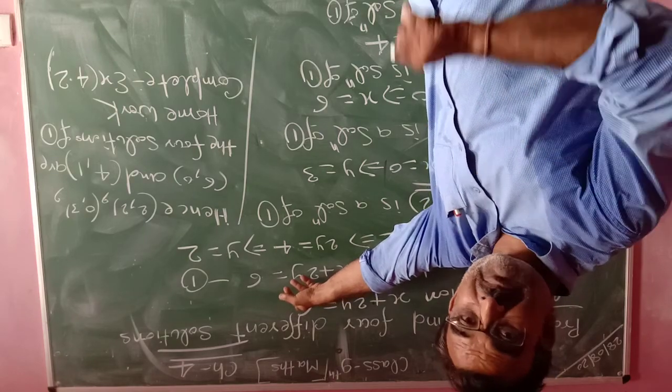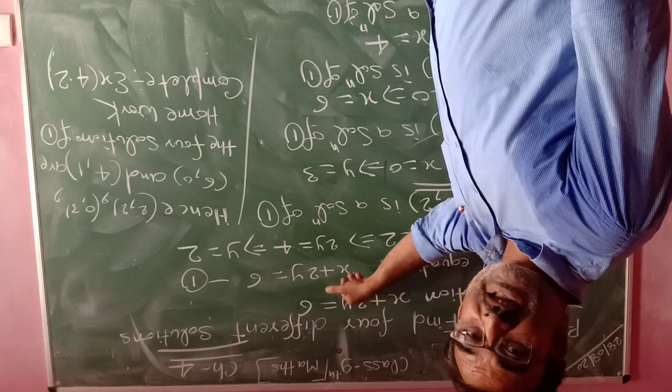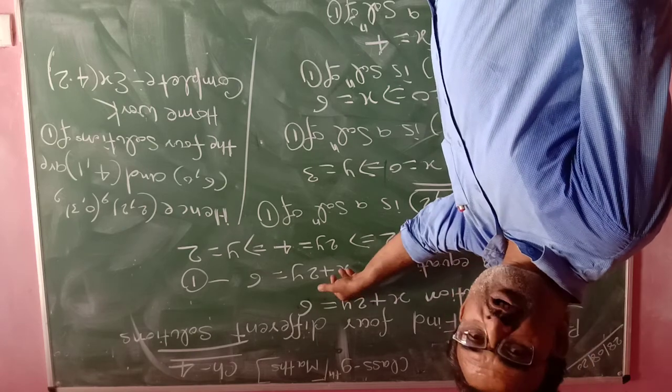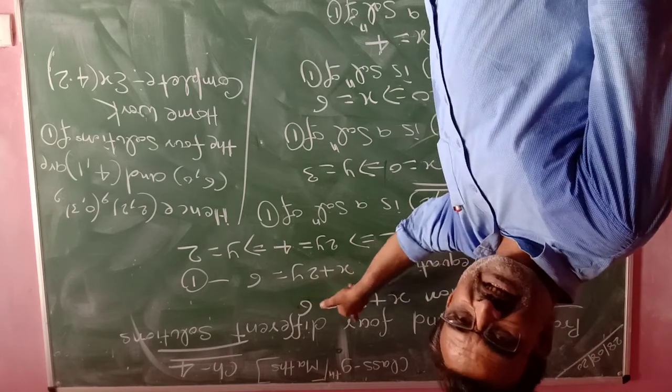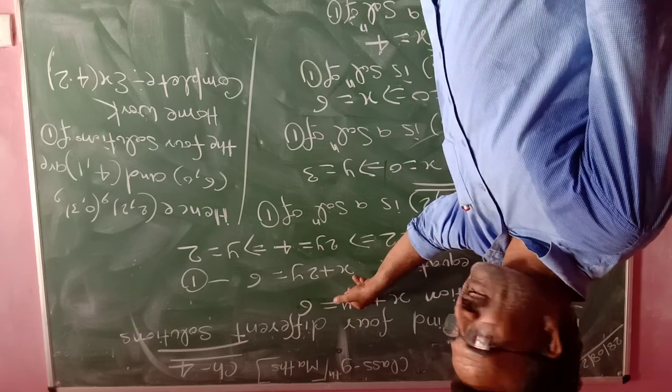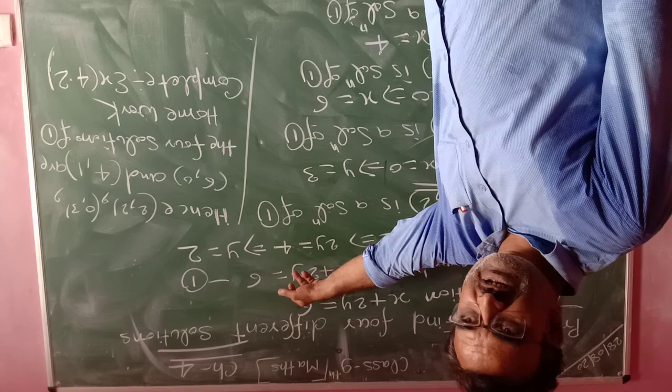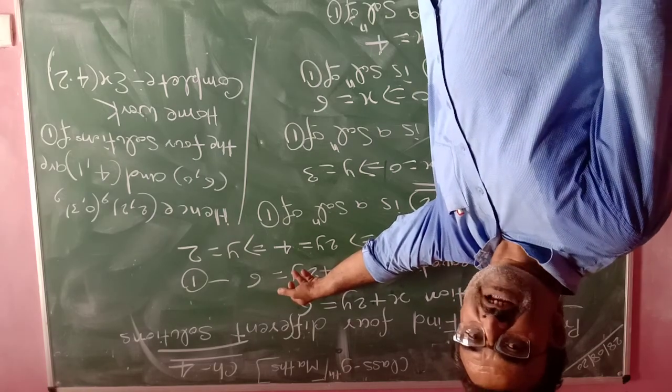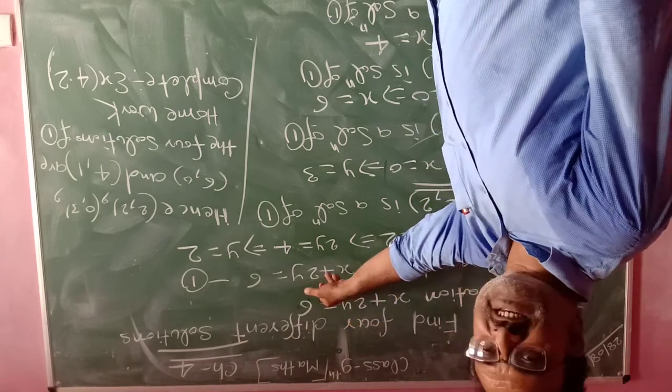For example, if we substitute x equal to 2 and y equal to 2, we get 2 plus 4, which equals 6. Therefore, x equal to 2 and y equal to 2 is a solution of the given linear equation.